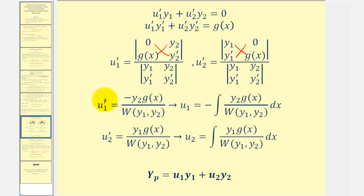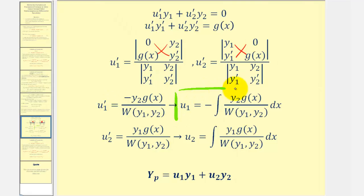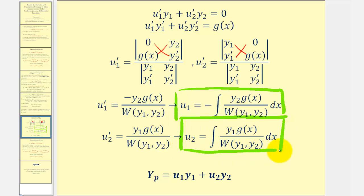So u₁ prime and u₂ prime are each expressed as a quotient involving the Wronskian. Because we need u₁ and u₂ themselves, we integrate both sides of each equation, giving us the integral formula for u₁ and the integral formula for u₂. These are the two functions we need in order to find our particular solution to the non-homogeneous differential equation.